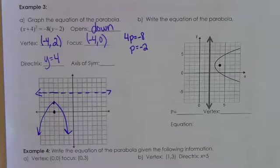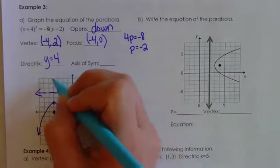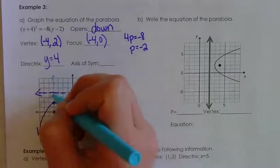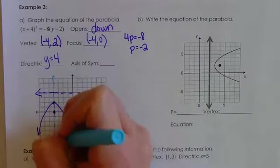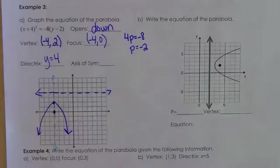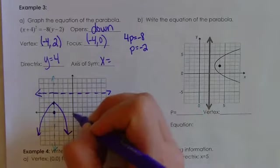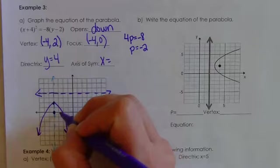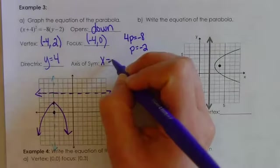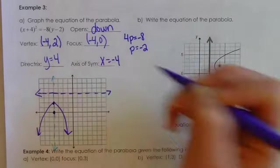The axis of symmetry connects the vertex to the focus. It's a vertical line — that means VUX, so x equals negative 4, because we went to the left.